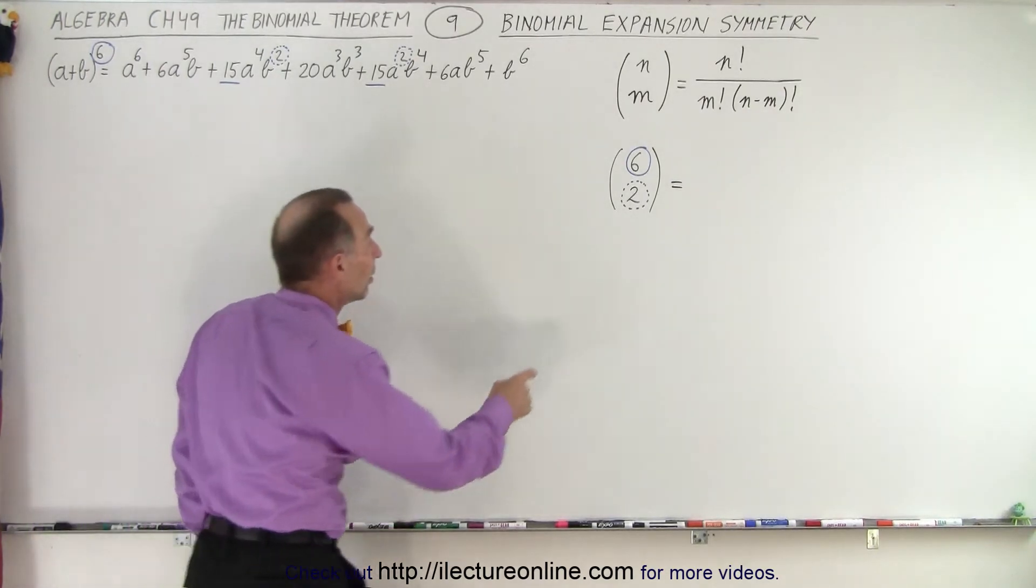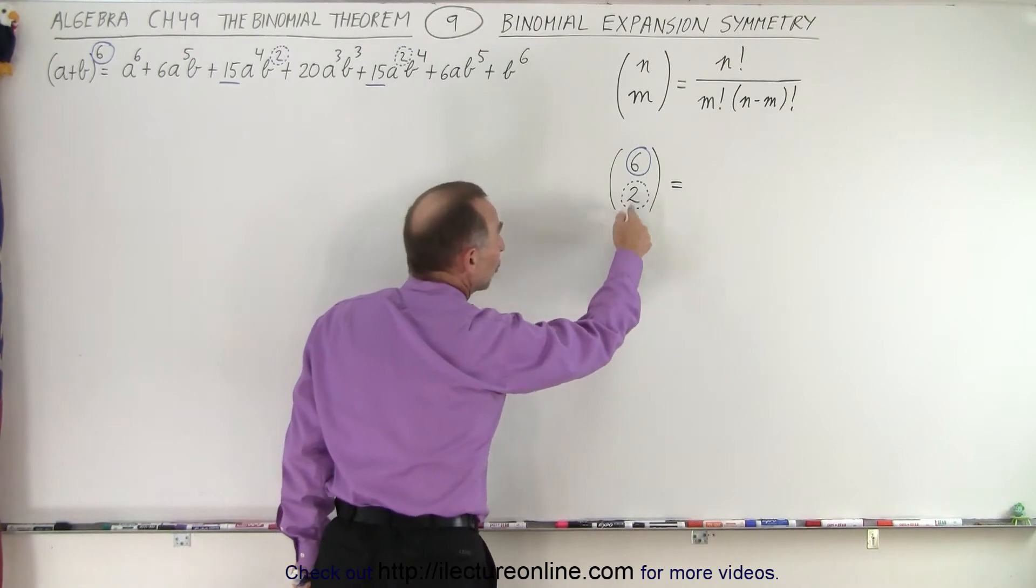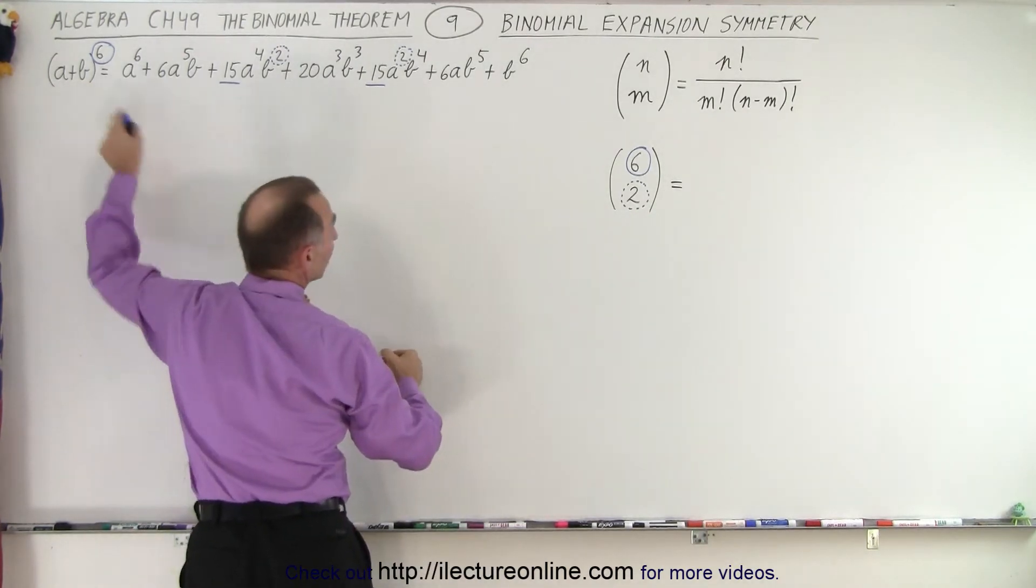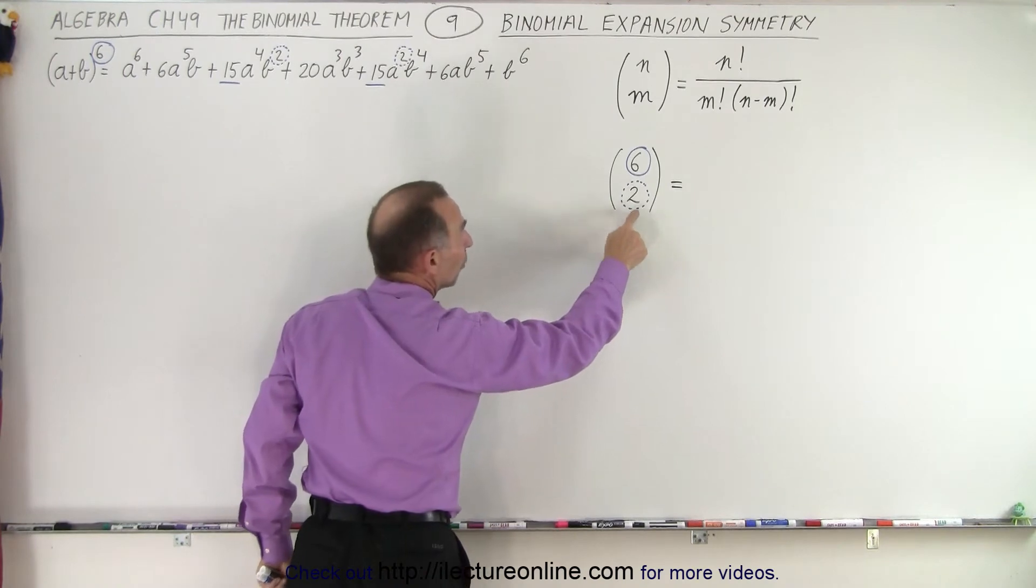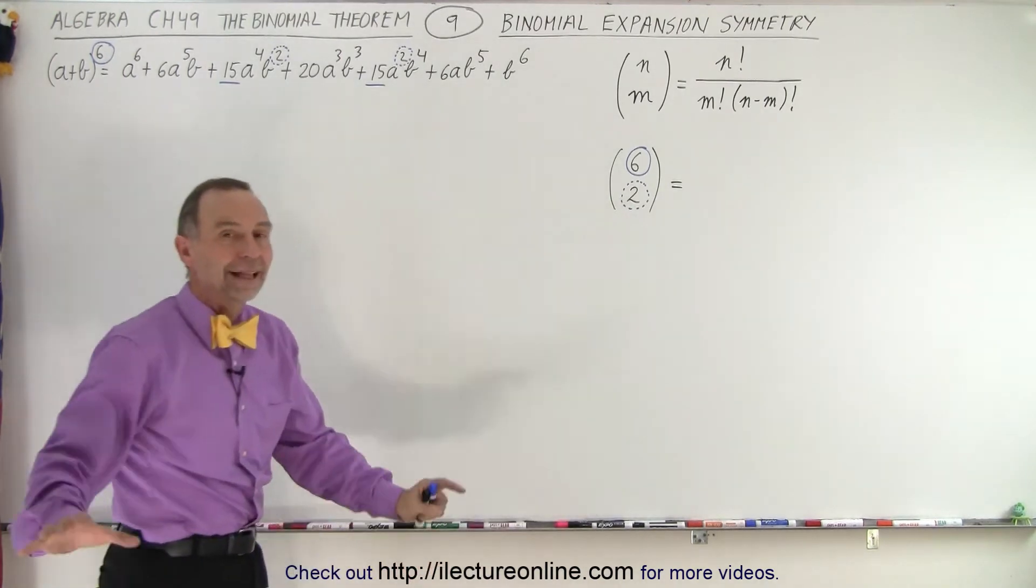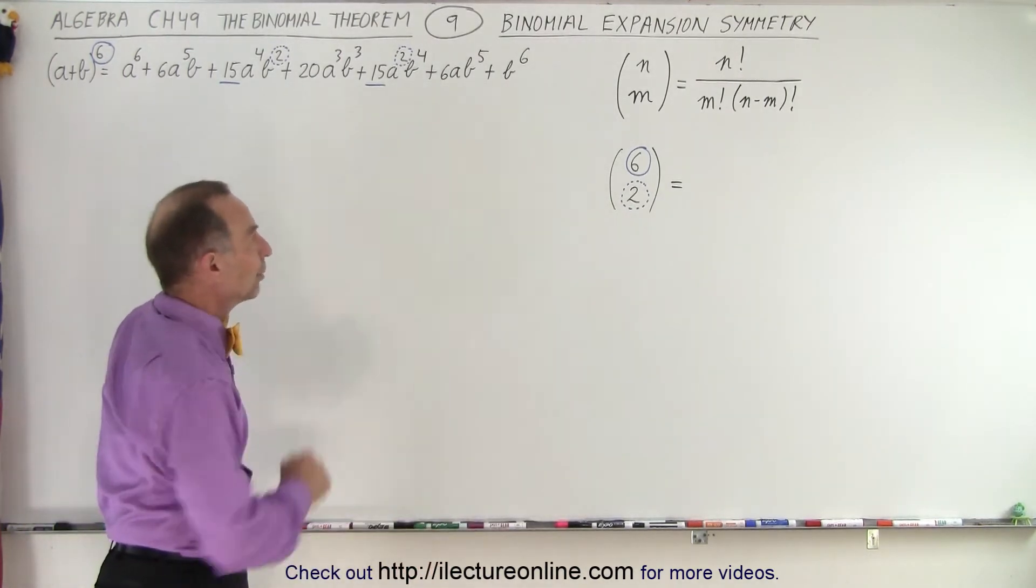So it really doesn't matter which exponent or which term of the binomial you consider when you take a look at the bottom number. That's the perfect symmetry in the binomial expansion.